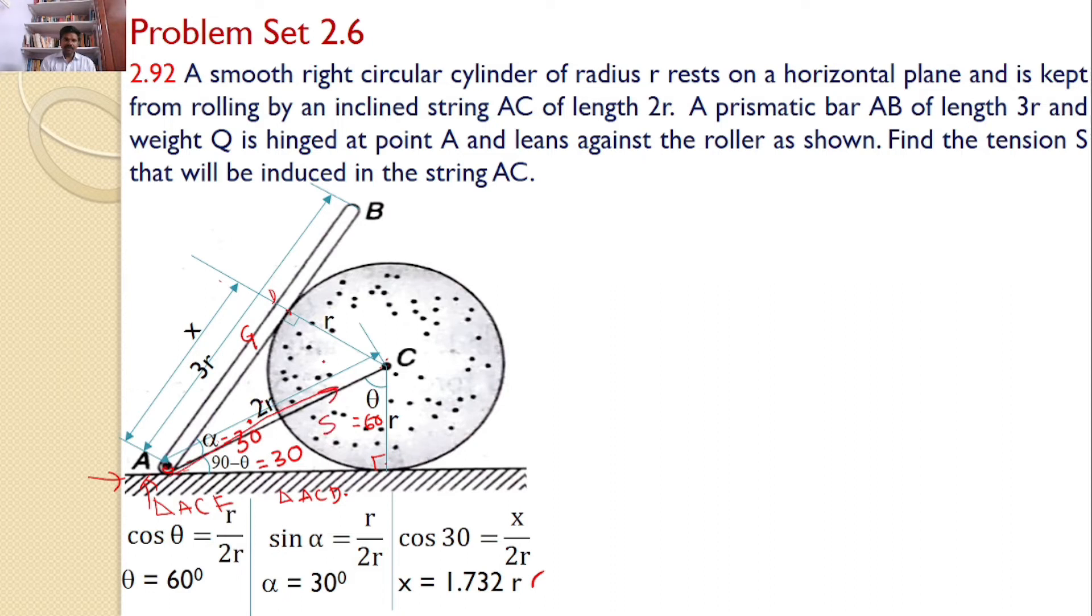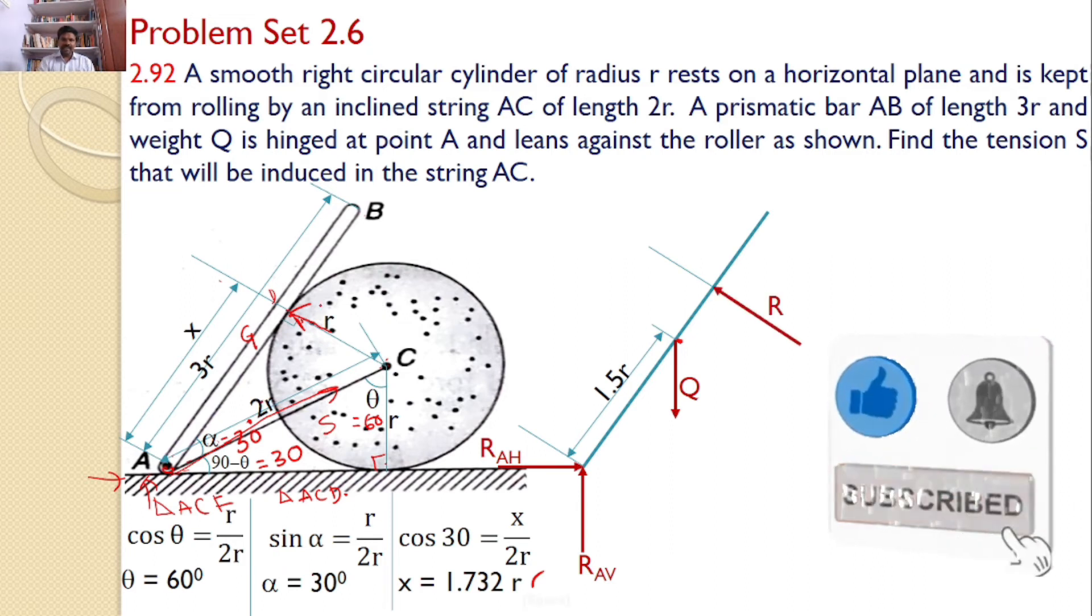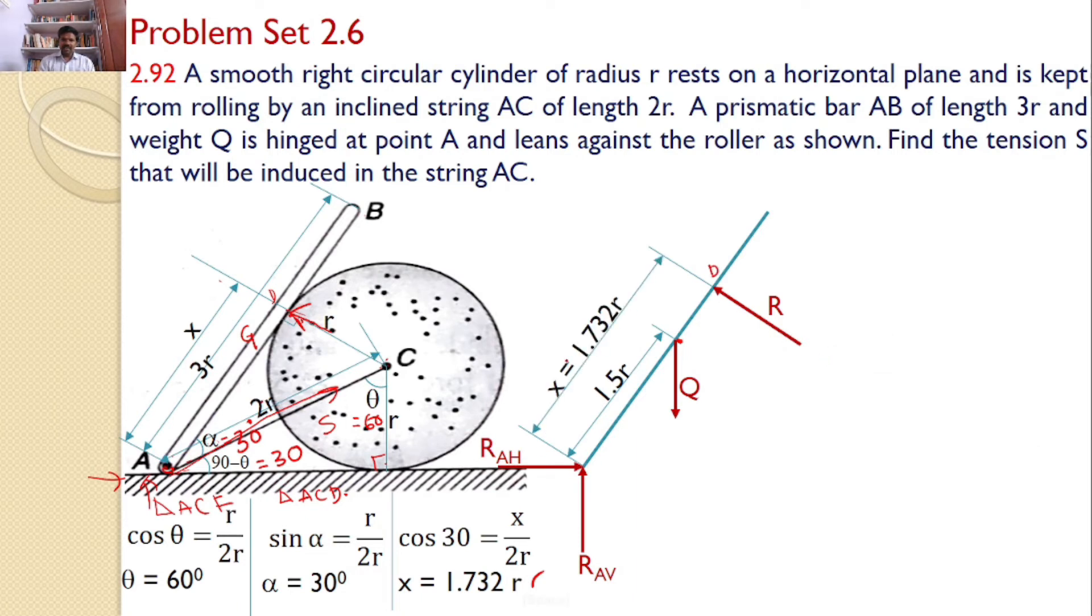There is a reaction force by the cylinder onto the prismatic bar. There are two reactions RAH and RAV and there is a Q self-weight which is at a distance of 1.5R. And there is a reaction at D. We calculated that distance is 1.732 into r. And we also know that this is an angle of 60 degrees. There is a string force S also acts at point A.